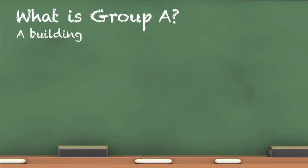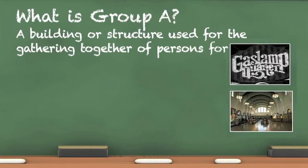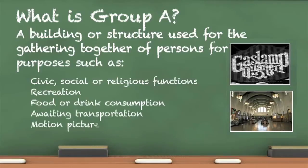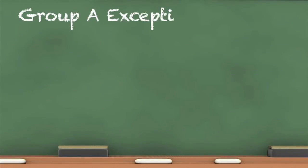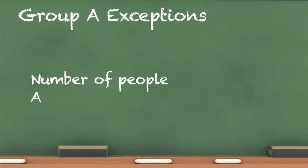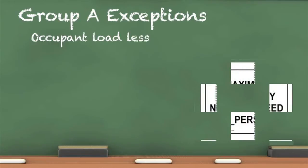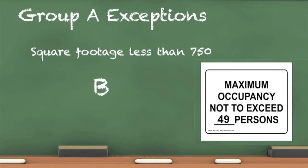Group A occupancies are defined as the use of a building or structure for the gathering together of persons. The type of gathering dictates the sub-occupancy classification. The number of people permitted to occupy the space, the amount of available space, and how it's used dictates whether or not an occupancy is classified as Group A. If there are fewer than 50 people or less than 750 square feet, it's Group B.